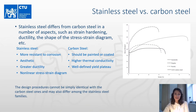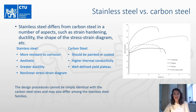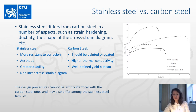As mentioned, stainless steel differs from carbon steels in a number of aspects, such as strain hardening, ductility, etc. The most important is the shape of the stress-strain diagram. Stainless steel is a nonlinear material which has significant hardening and greater ductility, as evident from the stress-strain curve. Therefore, the design procedure for stainless steel cannot be simply identical with carbon steel ones and may also differ among the stainless steel families.